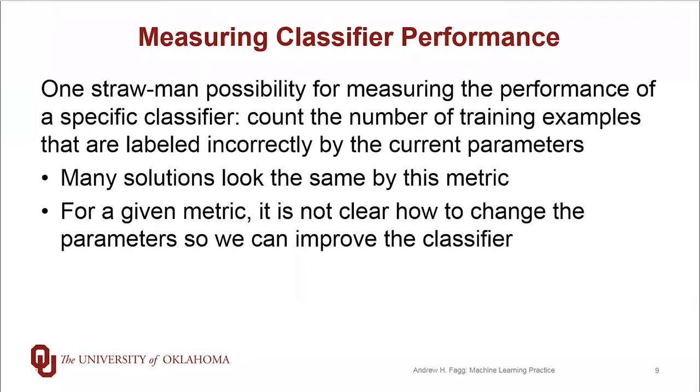And in fact, error in this setup can only be an integer value. So the key takeaway from these drawings is that, at least intuitively, it's capturing the right idea. However, many solutions look the same by this metric. And something else that we have trouble with is that for this metric value, for a given metric value, it's not really clear how to actually make changes to the parameters so that we improve the classifier.